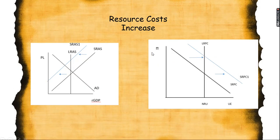When resource costs increase, short run aggregate supply decreases, causing the short run Phillips Curve to increase.